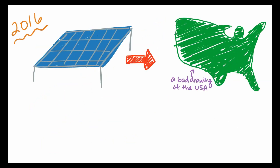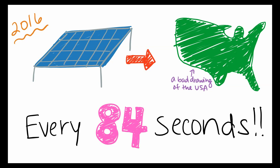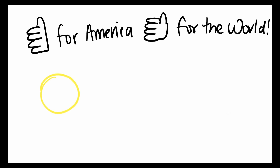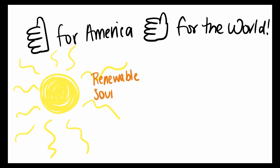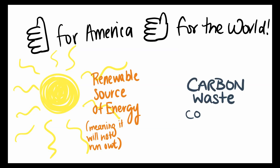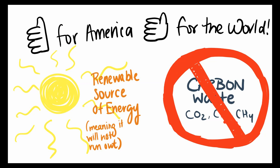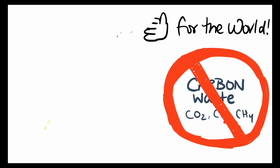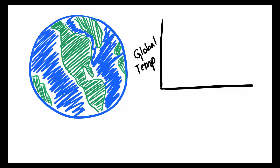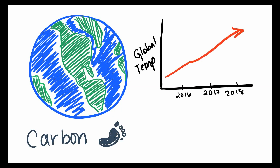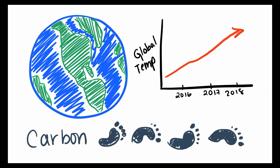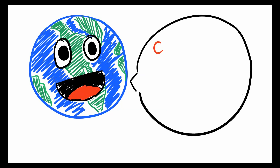Considering that in 2016 a new solar system was being installed every 84 seconds, solar energy looks to be spreading, and that's really good for America and the entire world. Because solar power is a really important renewable source of energy, mainly because it does not produce any carbon waste like coal, oil, natural gas, or other types of energy. And in a world where climate change is a growing threat to humanity, it is so important that we continue to work to lessen our carbon footprint to help reduce the effects and pace of climate change, and hopefully change our world for the better.